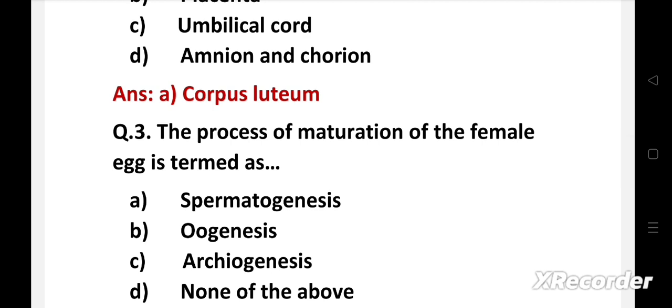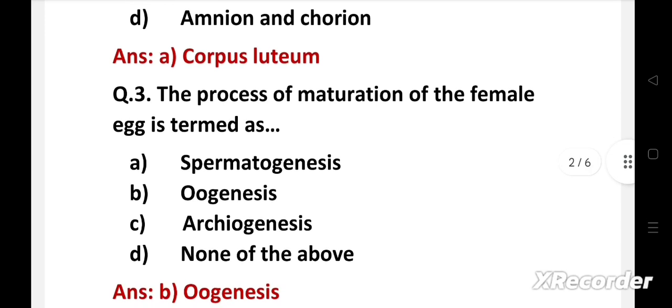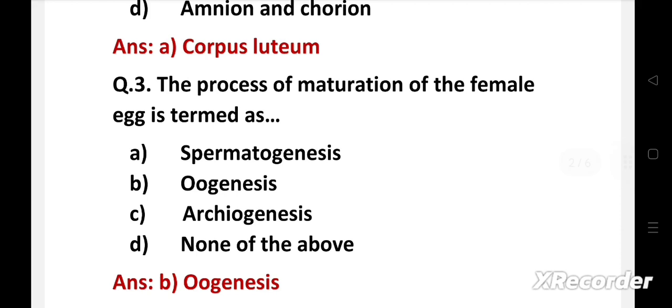Next question. The process of maturation of the female egg is termed as: Option A: spermatogenesis, B: oogenesis, C: archaeogenesis, D: none of the above. Right answer is option B: oogenesis.